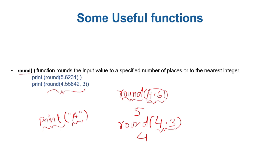When round accepts only one argument, it returns the nearest integer. When it accepts a floating-point number and a second argument like 3, that means go to three decimal places after the decimal point, then round. The last retained digit is rounded based on the next digit — if it's larger than 5, it rounds up; if smaller, it stays. Let's practice this in Jupyter Notebook.